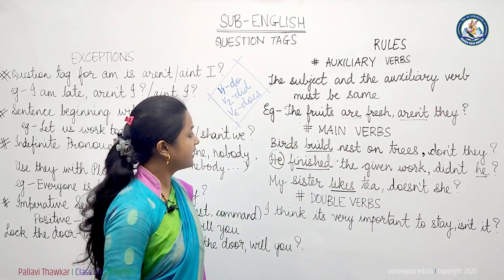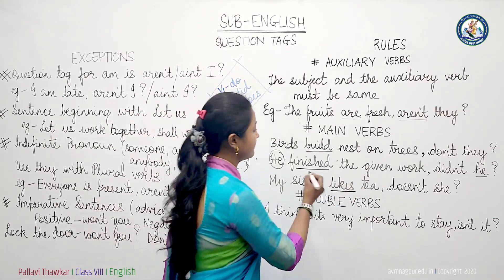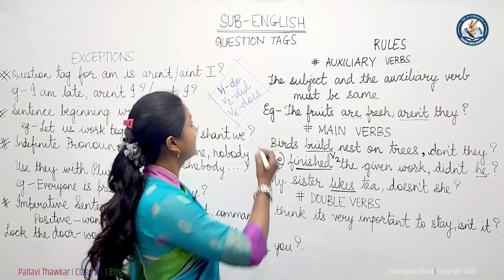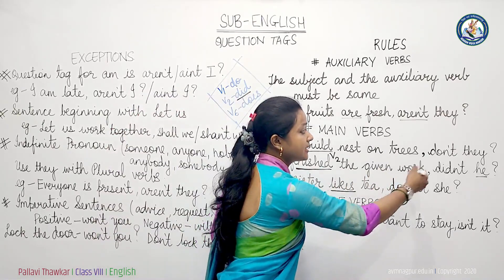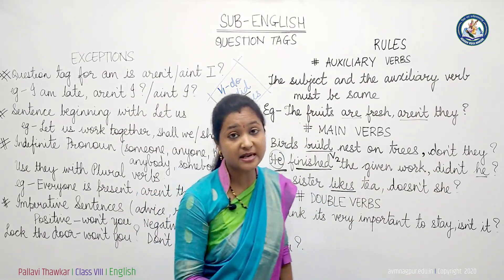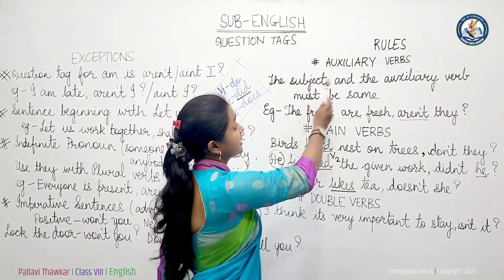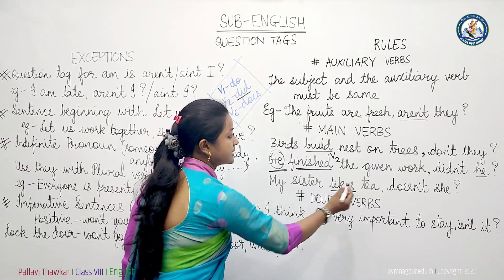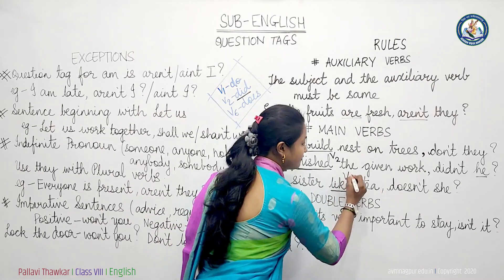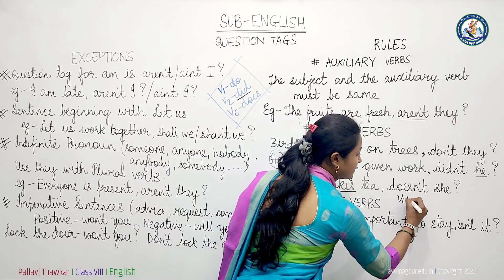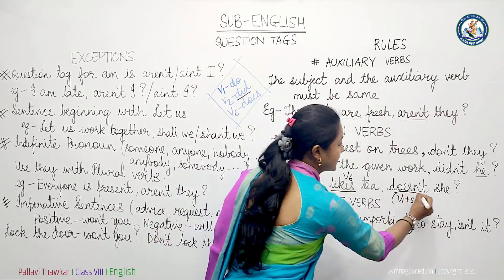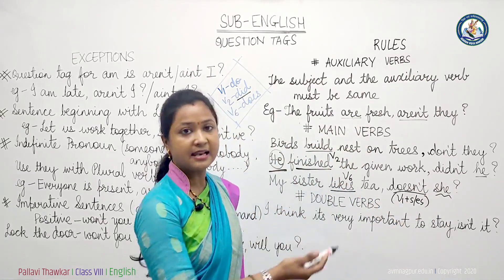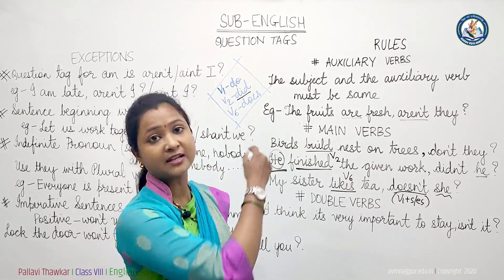'He finished the given work, didn't he?' — 'finished' is V2, so we use 'did', and since the statement is positive, we use 'didn't'. The subject 'he' is already in the statement so we use the same subject. 'My sister likes tea, doesn't she?' — 'likes' is V6 (V1 plus S/ES), so we use 'does' in its negative form 'doesn't', and since 'my sister' is female, we use 'she'. The subject and auxiliary verb must remain consistent.